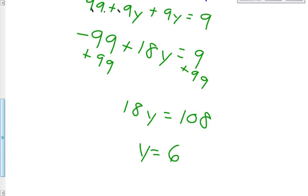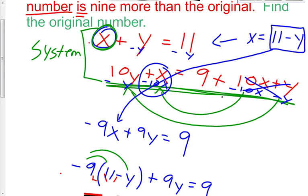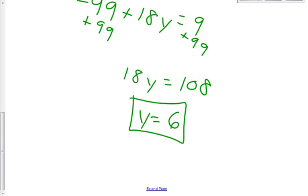Alright, if you know that y = 6, what does x equal? Well, we know that x + y = 11. And y is 6. So x + 6 = 11. And so x would then equal 5.